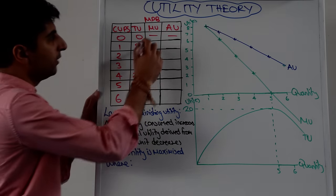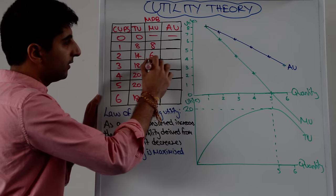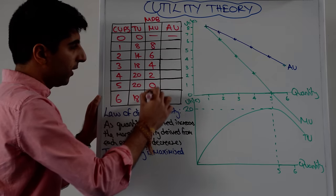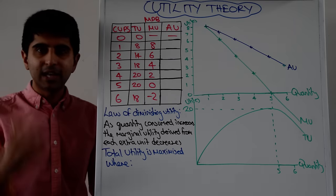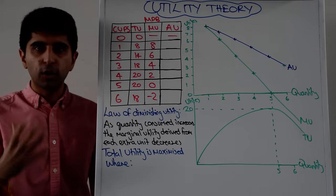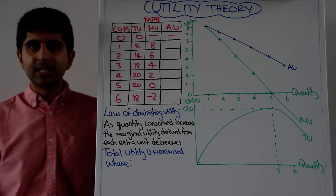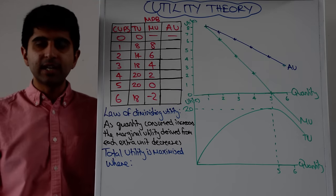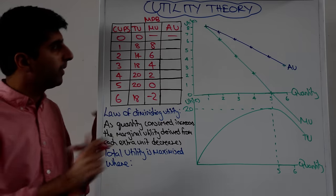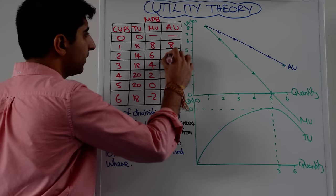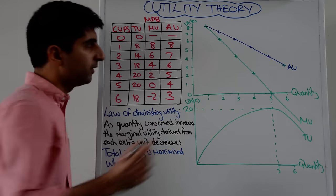So what is the marginal utility? Well, when the first cup is drunk it's 8, then it's 6, then it's 4, then it's 2, 0, and minus 2 — the extra utility generated when one more cup of Coca-Cola has been drunk. What about average utility? The average utility is just the total utility divided by the quantity, and that gives us 8, 7, 6, 5, 4, and 3. Very simple.